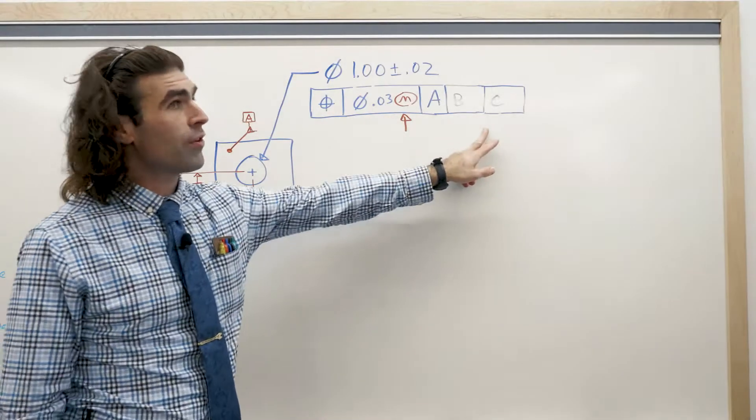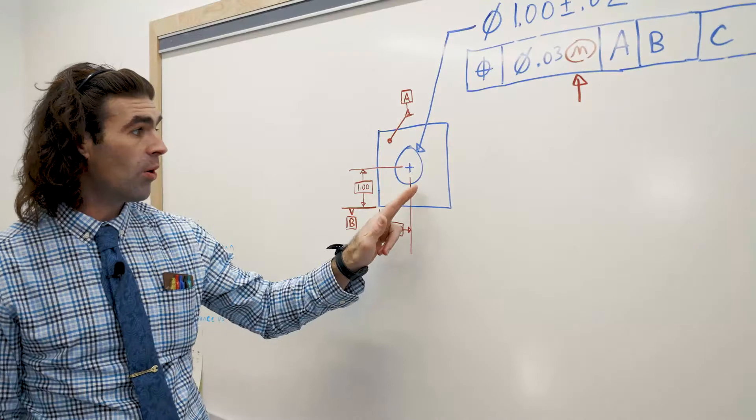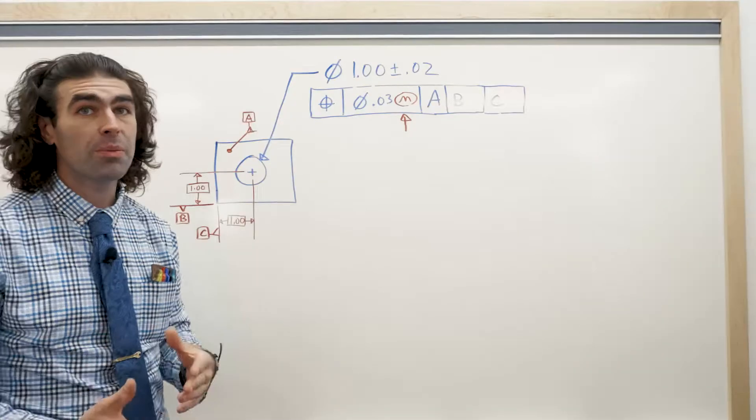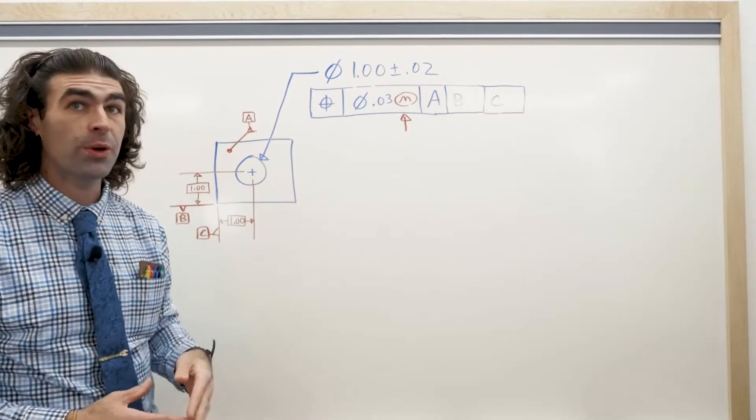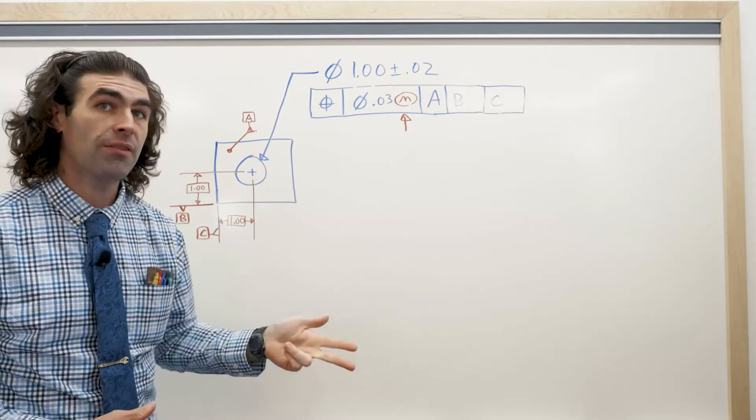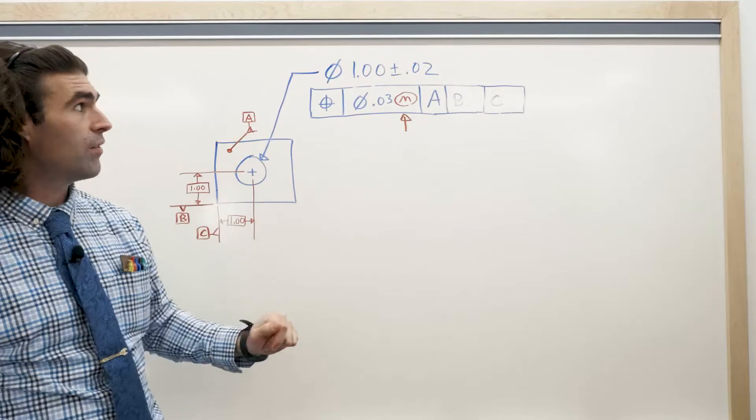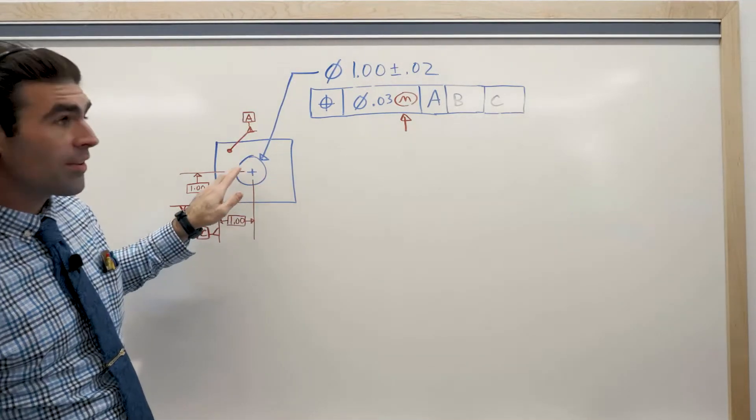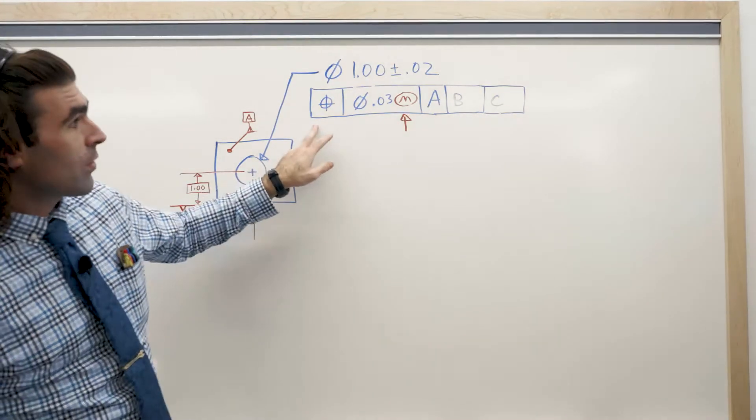Now, I've got a feature control frame here. We're controlling a hole. The hole has basic dimensions to datums. That's important for a position tolerance. You've got to have all three datums, basic dimension, feature control frame. All that's taken care of. Now, we have a size dimension controlling the size of the hole, and then our feature control frame.